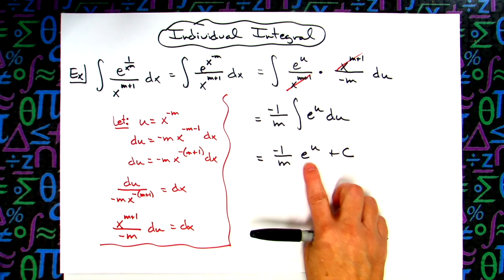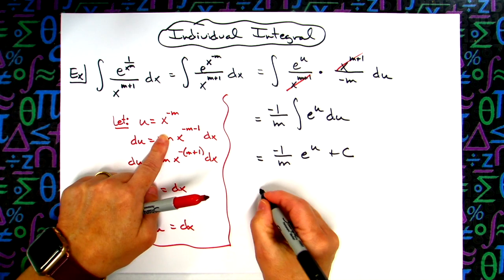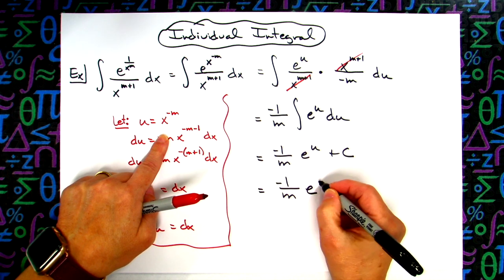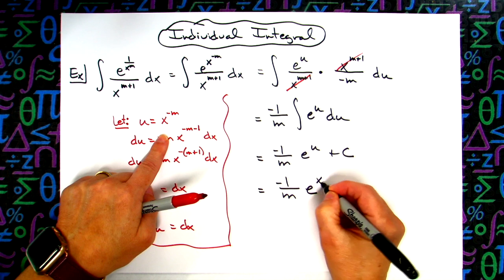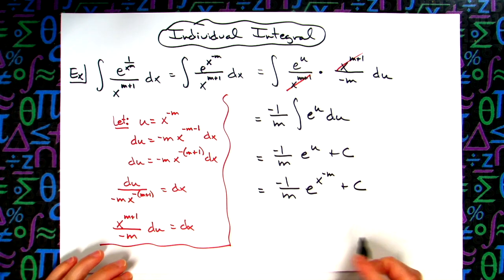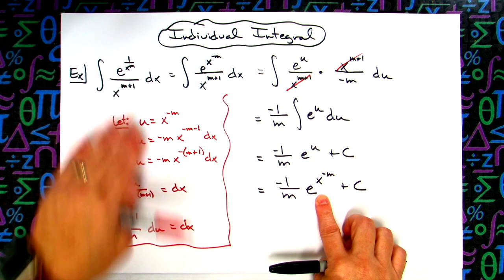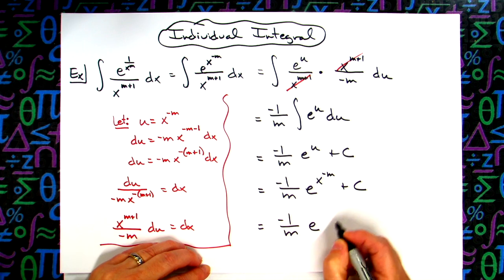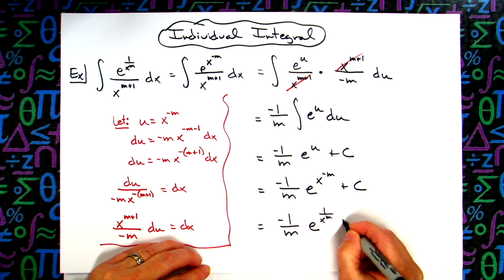And then simply replacing the u with what it equals, we'll have negative 1 over m e raised to the x to the negative m. And then if you wanted to go ahead and get rid of that negative exponent there, put it more back in the form of what we originally had, we'd have negative 1 over m e raised to the 1 over x to the m and then plus c.